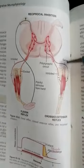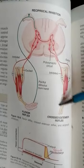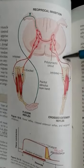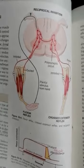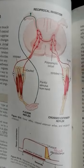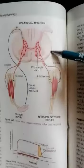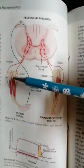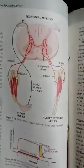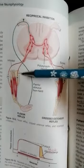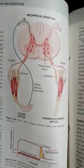This cross extensor reflex is important in maintaining the equilibrium of the muscle stress reflex. When one muscle is flexed, the antagonistic muscle should not also extend — if it were extending simultaneously, there would be no proper contraction. That is why, to cause proper flexion of one muscle, there will be inhibition of the antagonistic muscle.